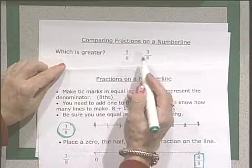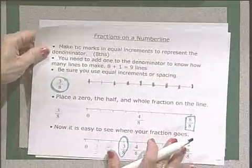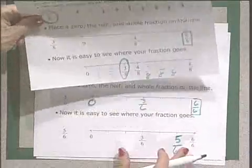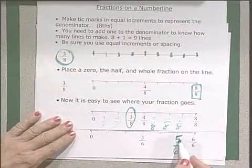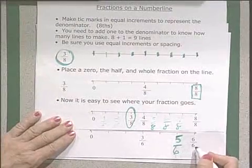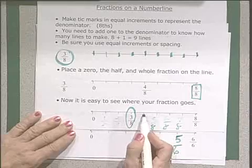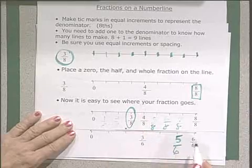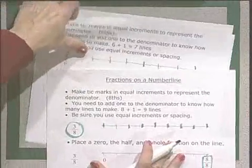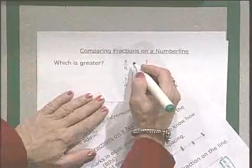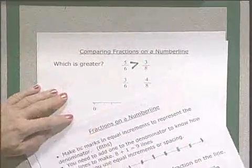Well, looking at those, it might be hard to see, but if we go back to our number line, and we put the two number lines together, here they are. We can see that five sixths is close to a whole. Three eighths is before the half, which tells us that five sixths is greater than three eighths.